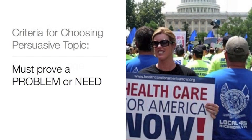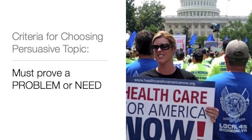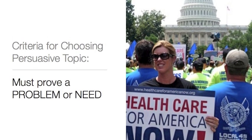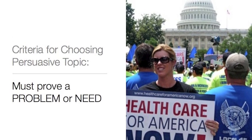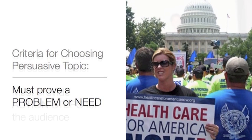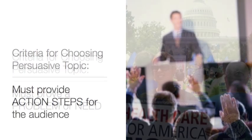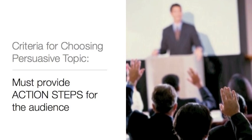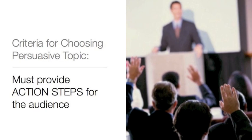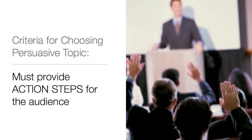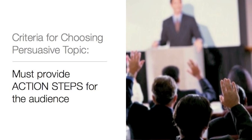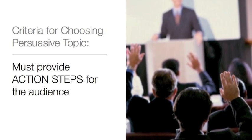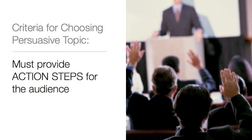Number five, your chosen topic must highlight a problem or a need. If there really isn't a problem that needs to be solved, you don't have a good persuasive speech topic — there must be a need or a problem. Number six, your chosen topic must have a solution to the problem, and the solution must be something that your audience can leave the classroom and actually do. In other words, your speech needs to provide action steps for your audience. If not, you have not met the criteria for this particular assignment.